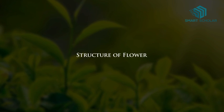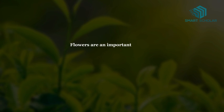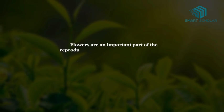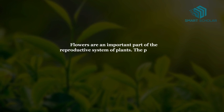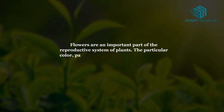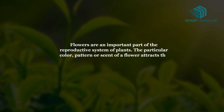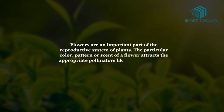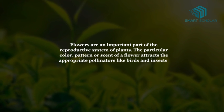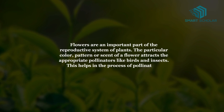Structure of flowers. Flowers are an important part of the reproductive system of plants. The particular color, pattern, or scent of a flower attracts the appropriate pollinators like birds and insects. This helps in the process of pollination.